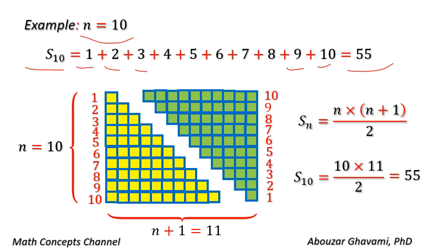Using the closed form equation for sum of the first n terms of natural numbers, we have Sn equals n times n plus 1 divided by 2. Substituting n with 10, we have Sn equals 10 times 11 divided by 2, that is also equal to 55.